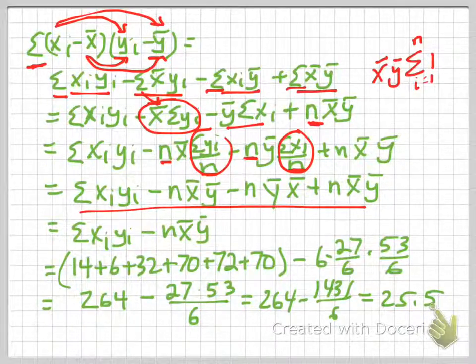So now one of the n times x-bar y-bar and the positive n times x-bar y-bar, those two cancel out, so I'm left with this expression. And this is much easier to calculate because I already know what x-bar and y-bar are.